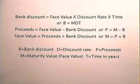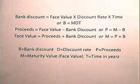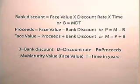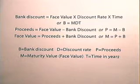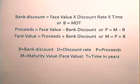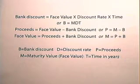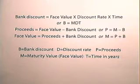Now let's take a look at the definitions of bank discount, proceeds, and face value. Bank discount equals face value times discount rate times time, or B equals MDT. The proceeds is face value minus bank discount, or P equals M minus B. The face value equals proceeds plus bank discount, or M equals P plus B. In each case, B is bank discount, D is the discount rate, P is the proceeds, M is the maturity value or the face value, and T is always time in years.